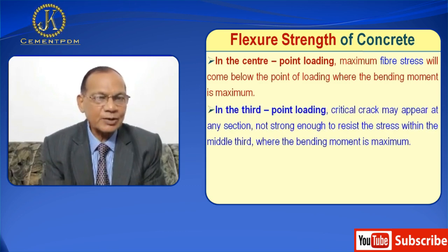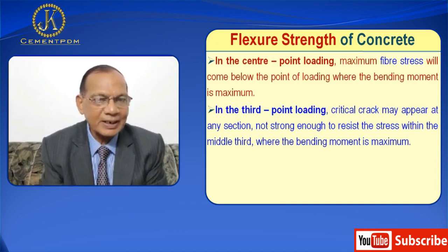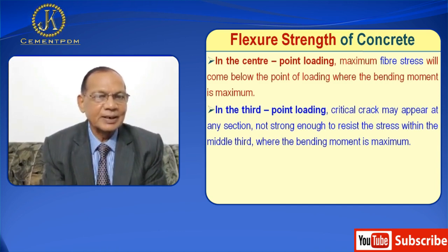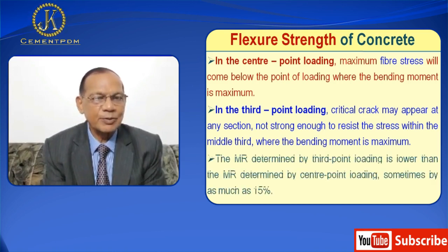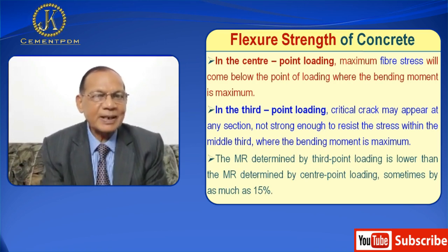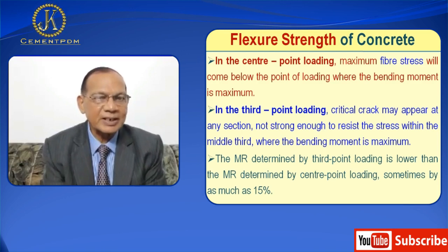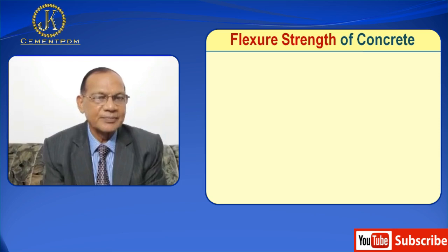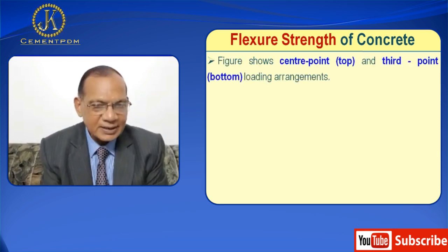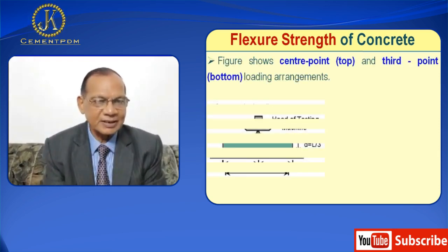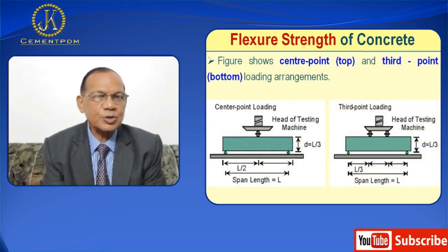In third point loading, a critical crack may appear at any section not strong enough to resist the stress within the middle third, where the bending moment is maximum. The MR determined by third point loading is lower than the MR determined by center point loading, sometimes by as much as 15%. The figure shown in the video shows center point loading (top) and third point loading (bottom).